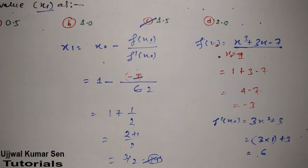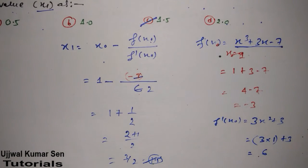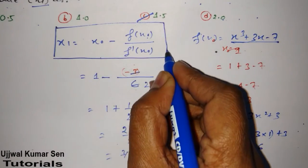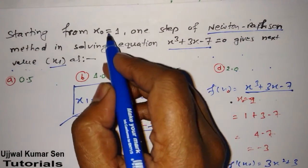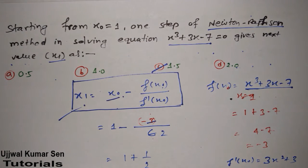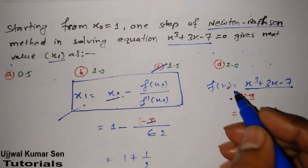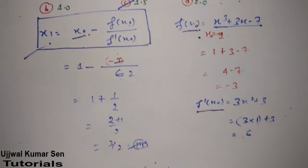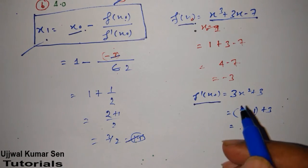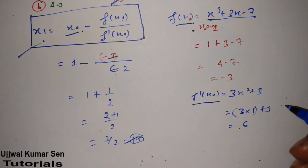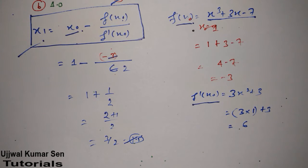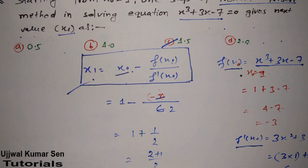Let's review what you need to solve this kind of problem. First, remember the formula. Then identify x₀, which is usually given — here x₀ = 1. Next, find f(x₀) by substituting x₀ into the function. Then find f′(x₀) by taking the single derivative — here we get 3x² + 3 — and substitute x₀ = 1 to get 6.